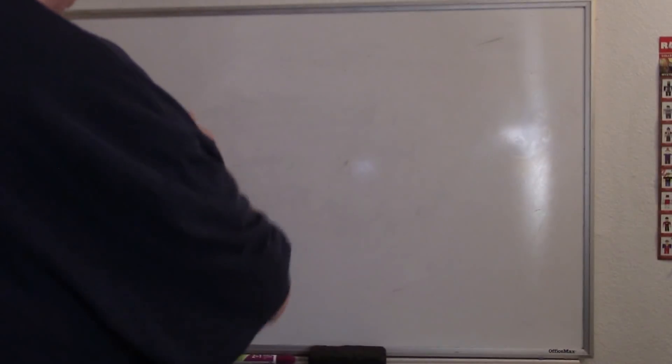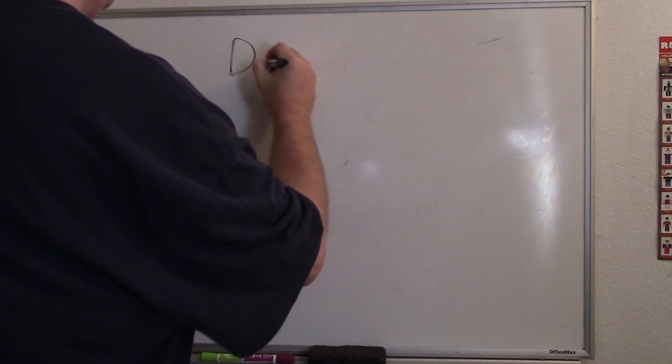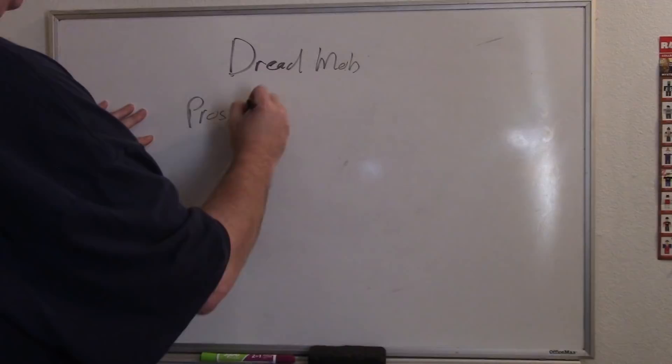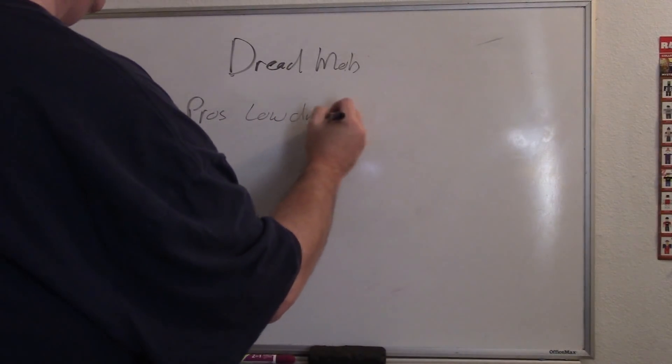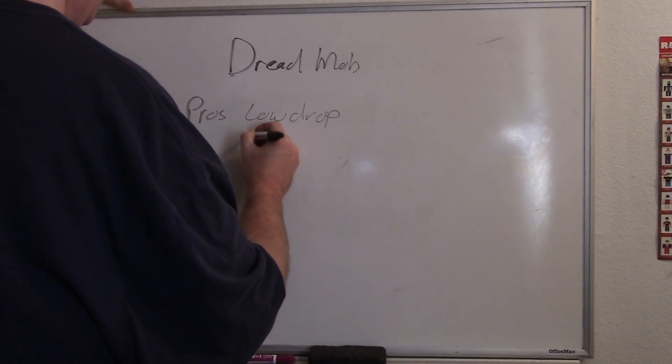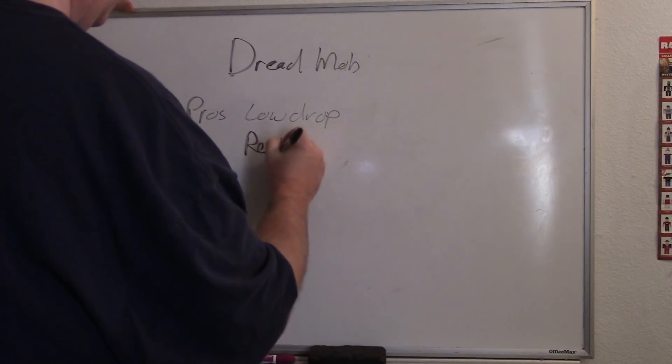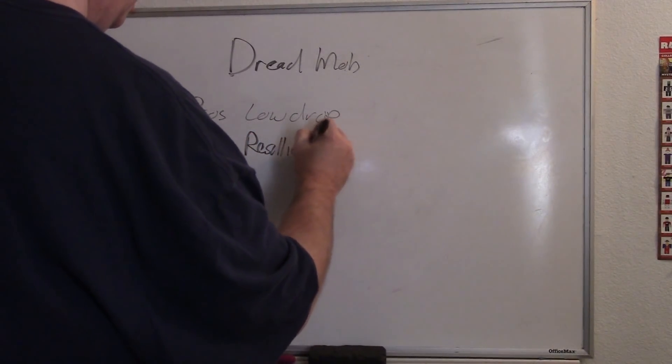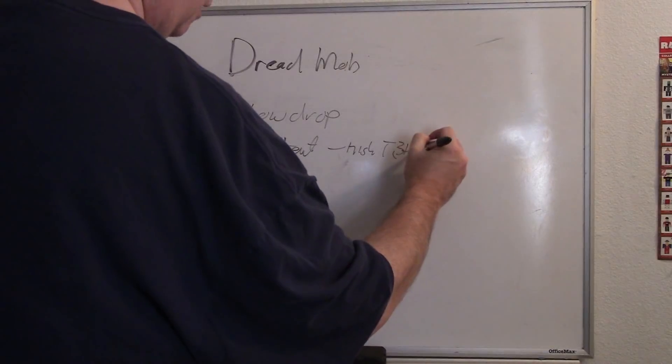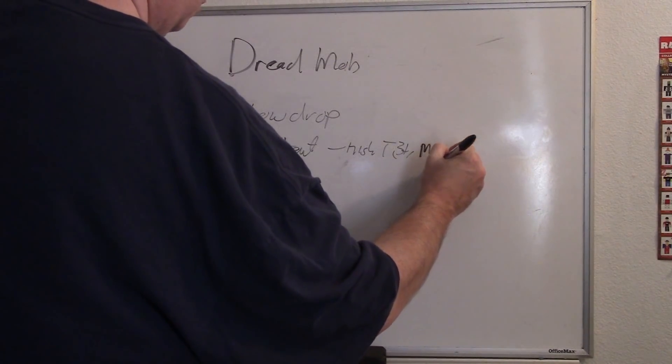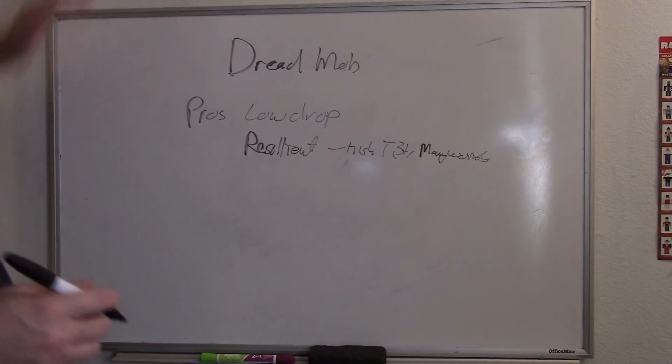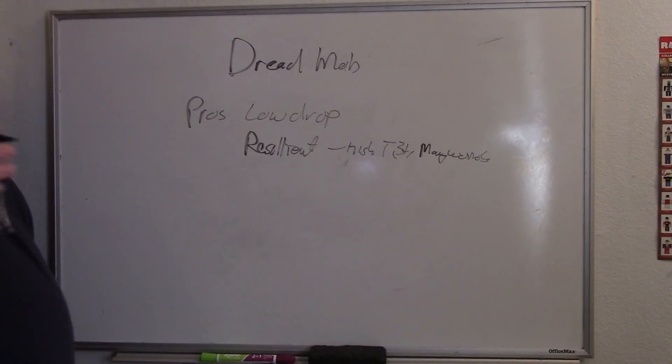Third archetype is of course the ever popular dread mob. Pros: low drops, few drops, get a better chance of getting that plus one to go first. Very high toughness and a number of wounds, resilient. So you got high toughness, three plus save, and many wounds.